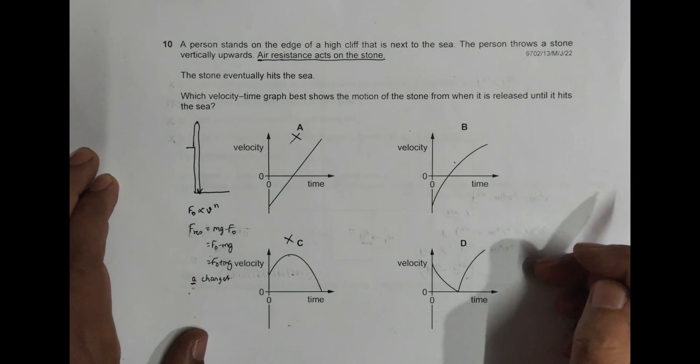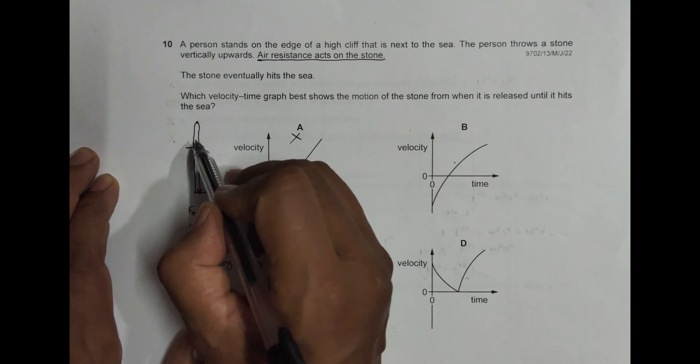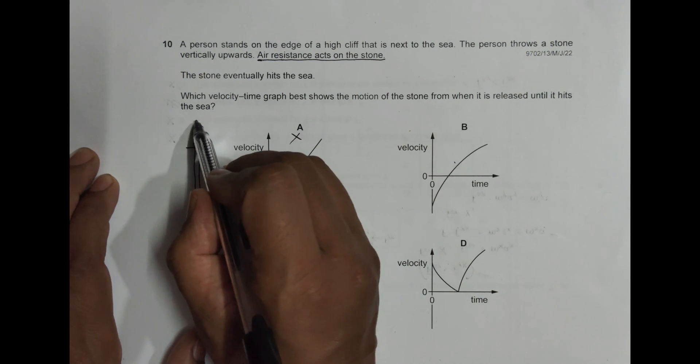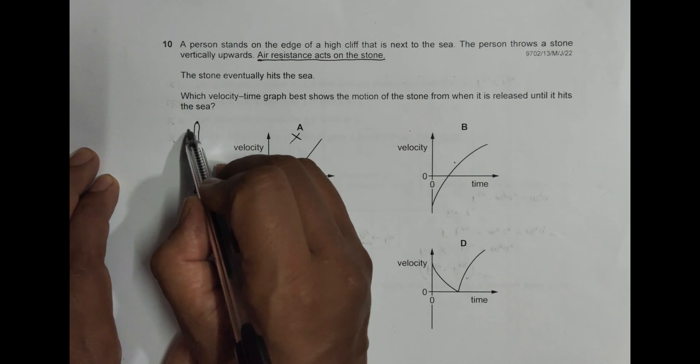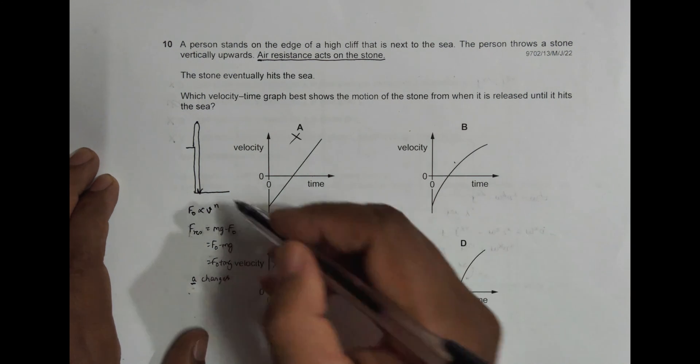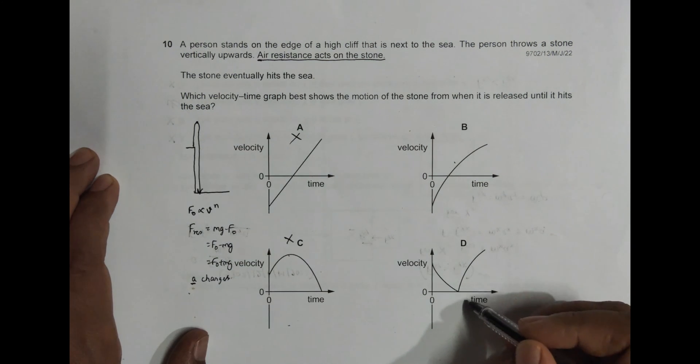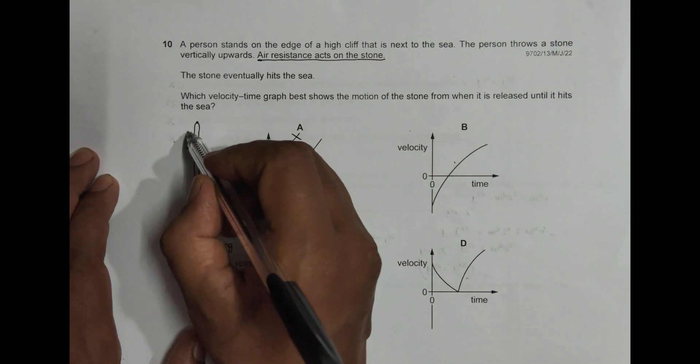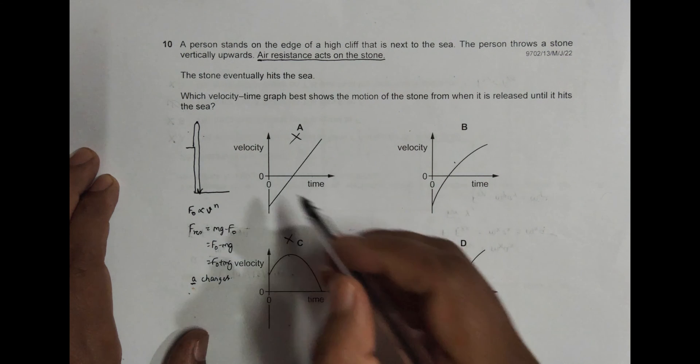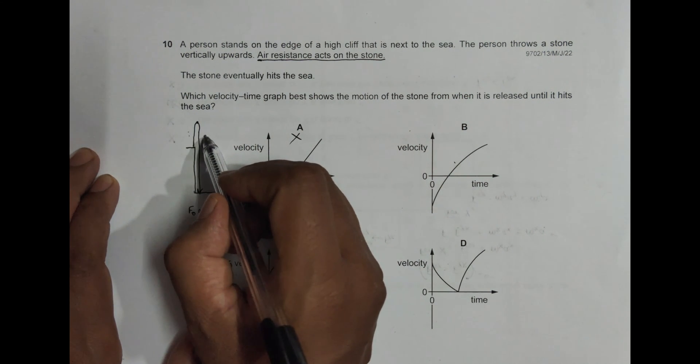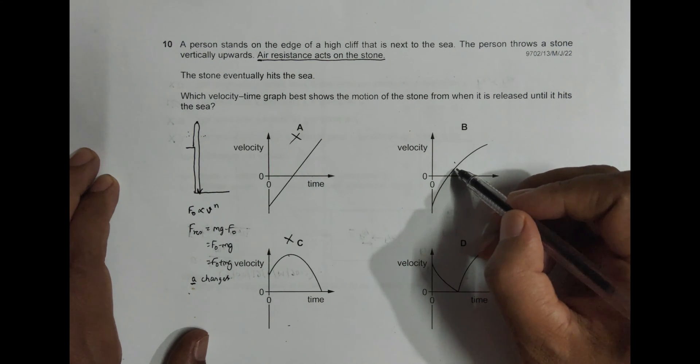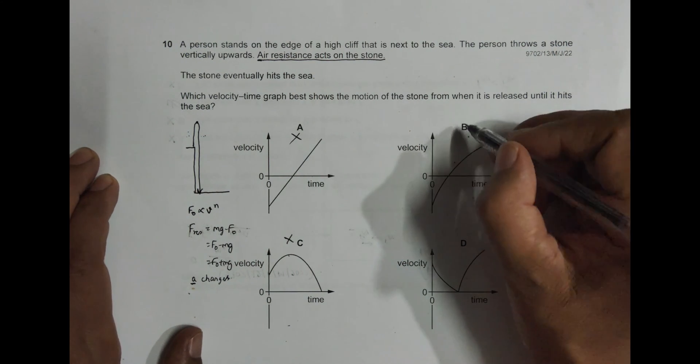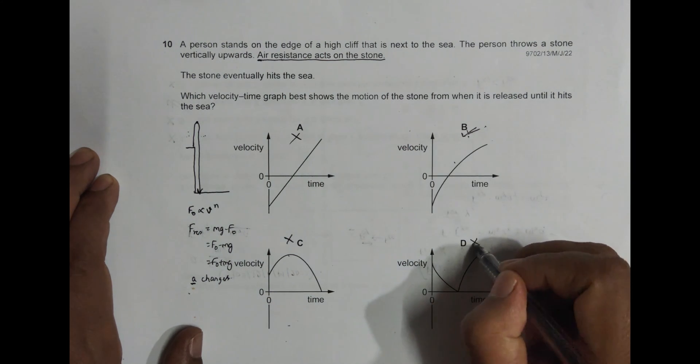Here v is in the upward direction, and here v is in the downward direction. If upward is taken as positive, as happens here, this should be negative. It doesn't happen in this option. If this is positive, this should be negative - not happening here. If this is negative, it should be positive - zero, then negative, then positive. This fulfills the criteria, so choice B is correct and this is incorrect.